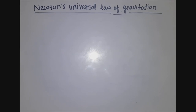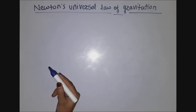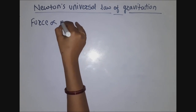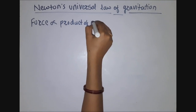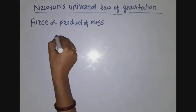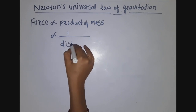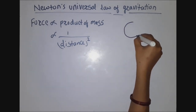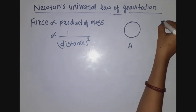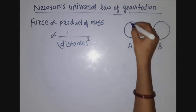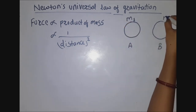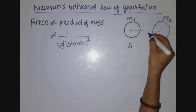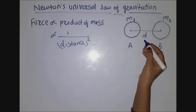Now we have to explain Newton's universal law of gravitation. To explain this statement, we have to consider two objects. Let A be one object and B be another object. Let the mass of object A be M1 and the mass of object B be M2. The distance between these two objects is denoted by D — in some books it is denoted by R, so don't get confused.